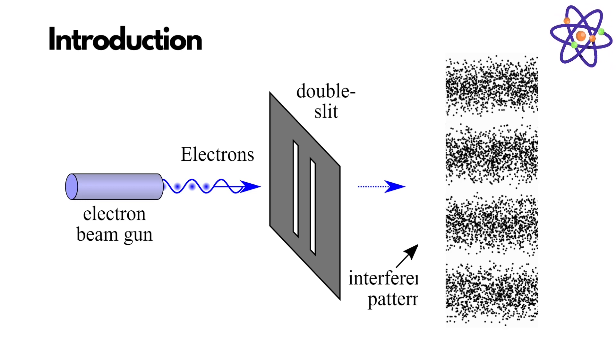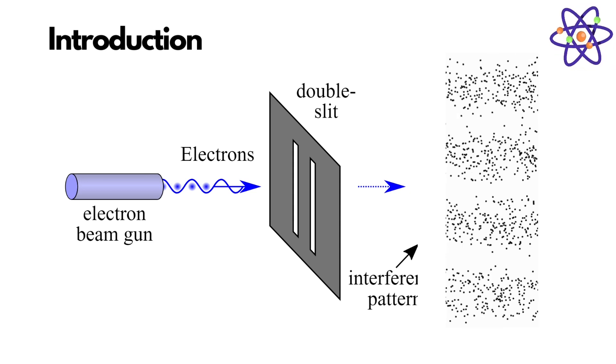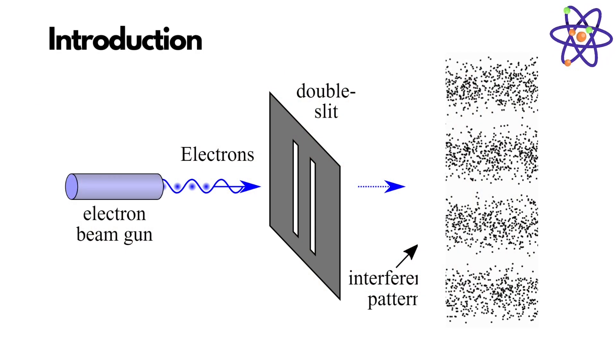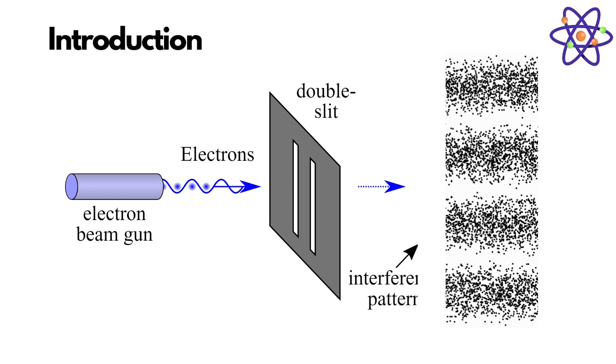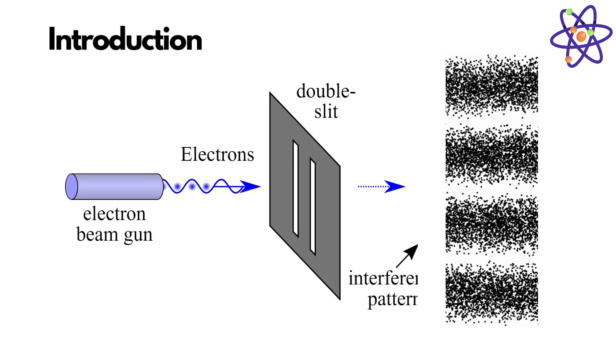In the 1960s, physicists decided to try the experiment again, but this time they used electrons instead of light. To everyone's surprise, the electrons also created an interference pattern. This meant that electrons, which are particles, were also behaving like waves.